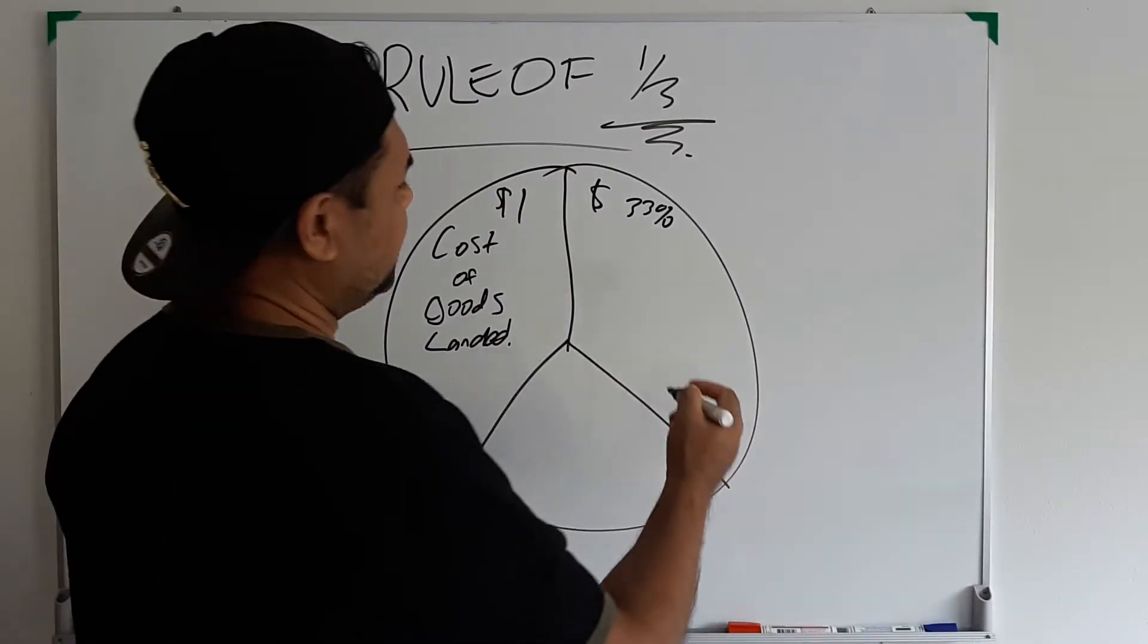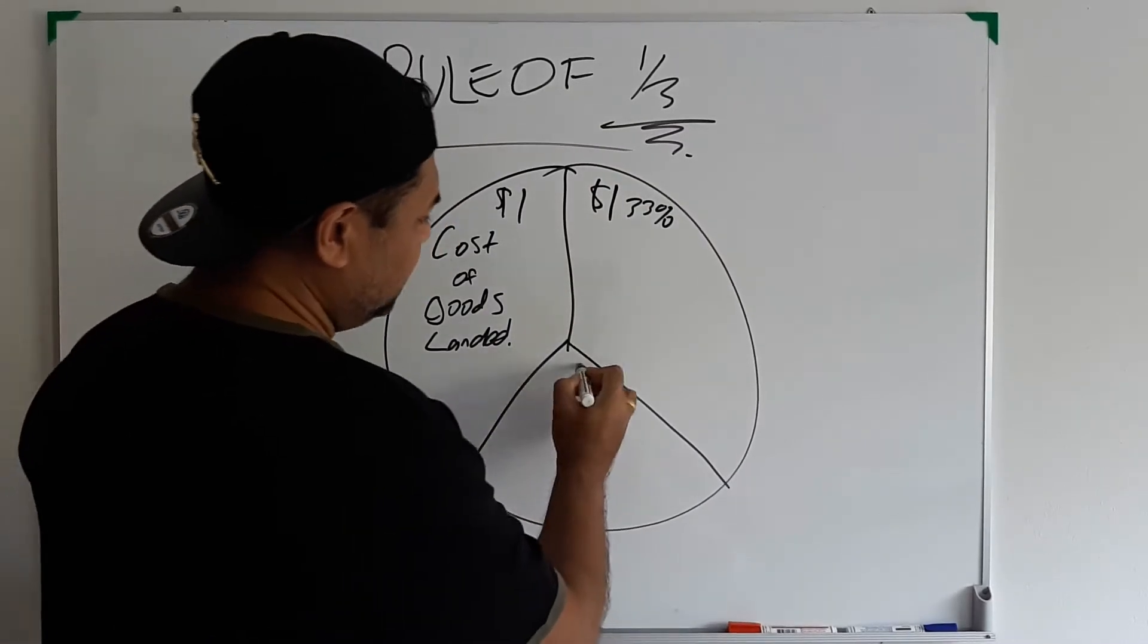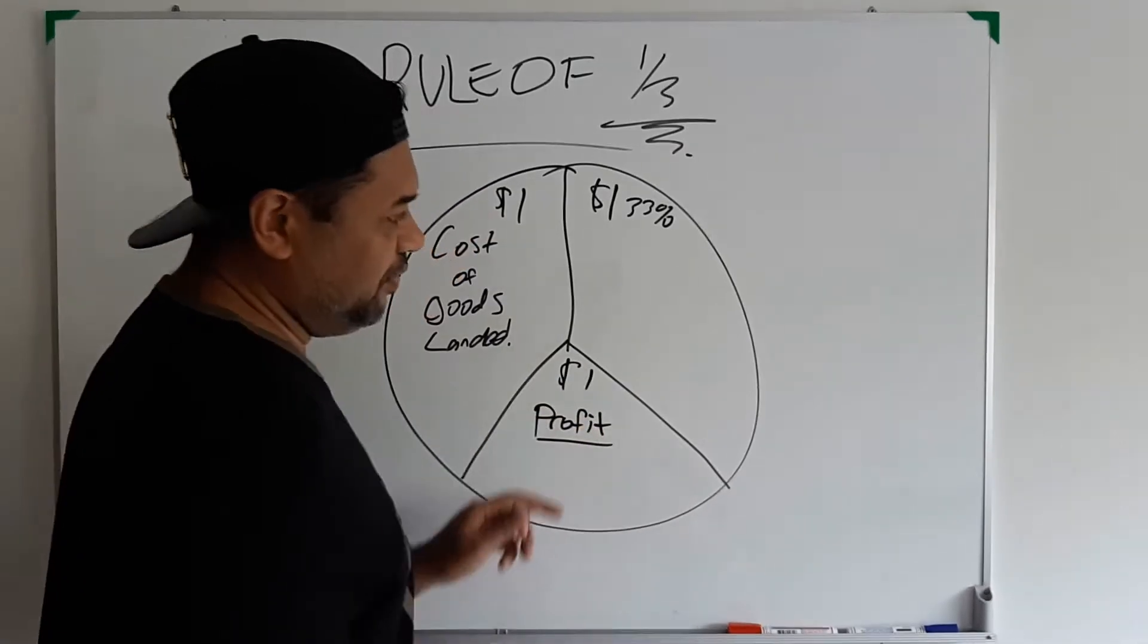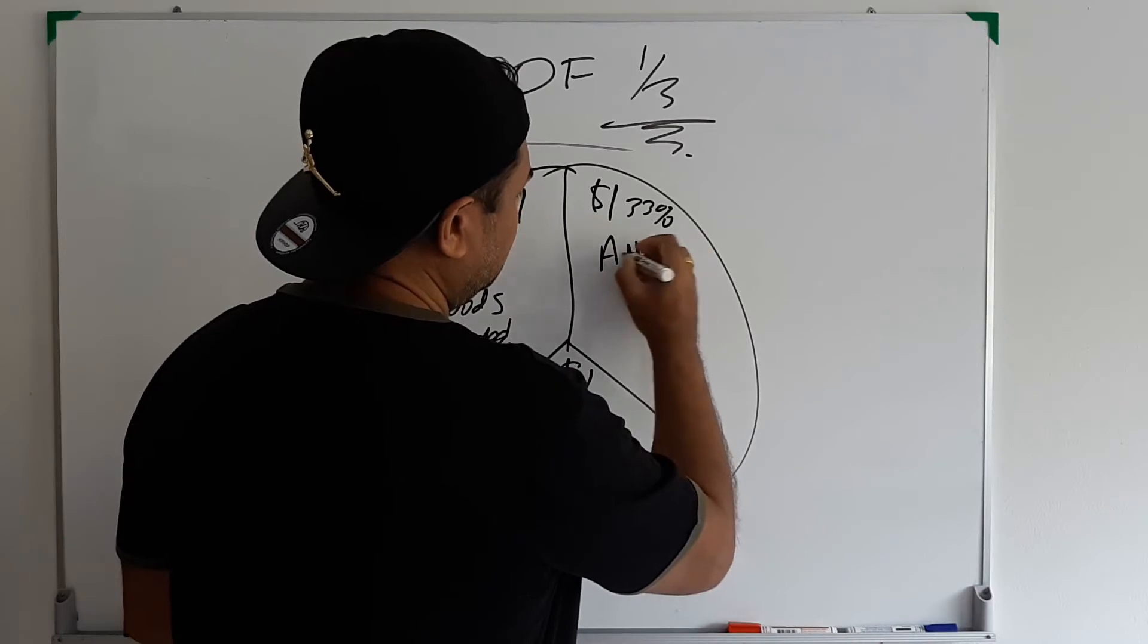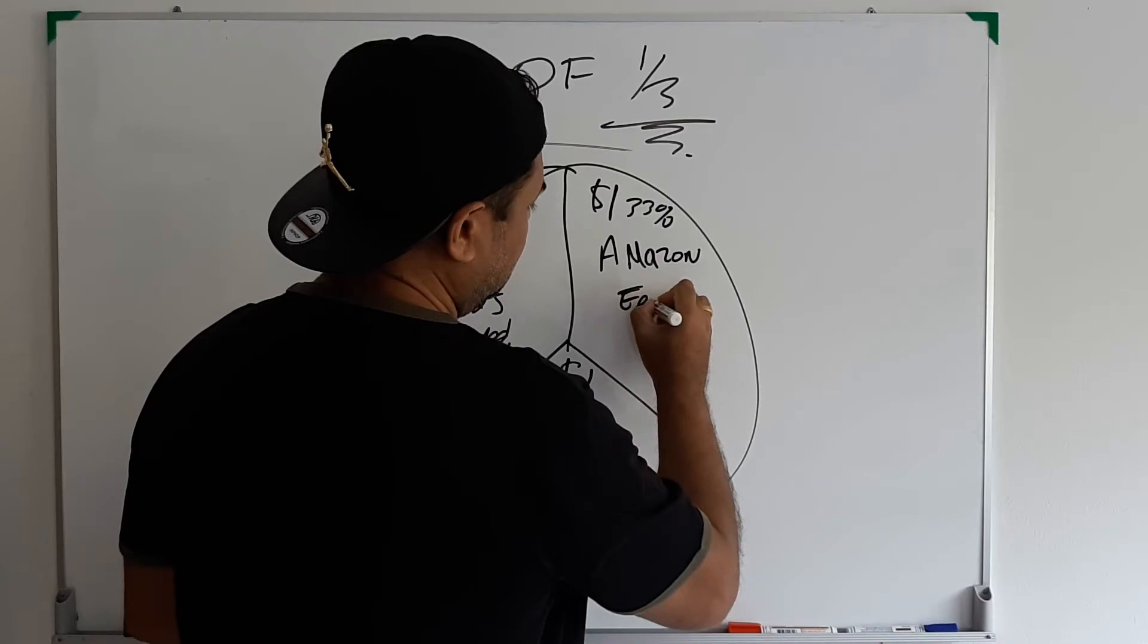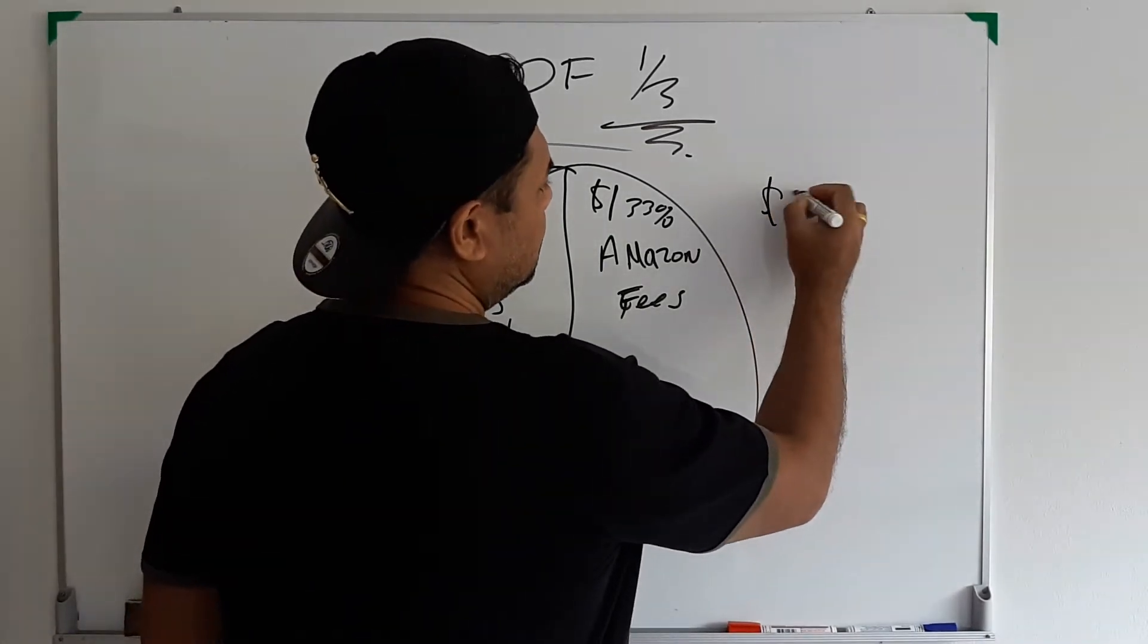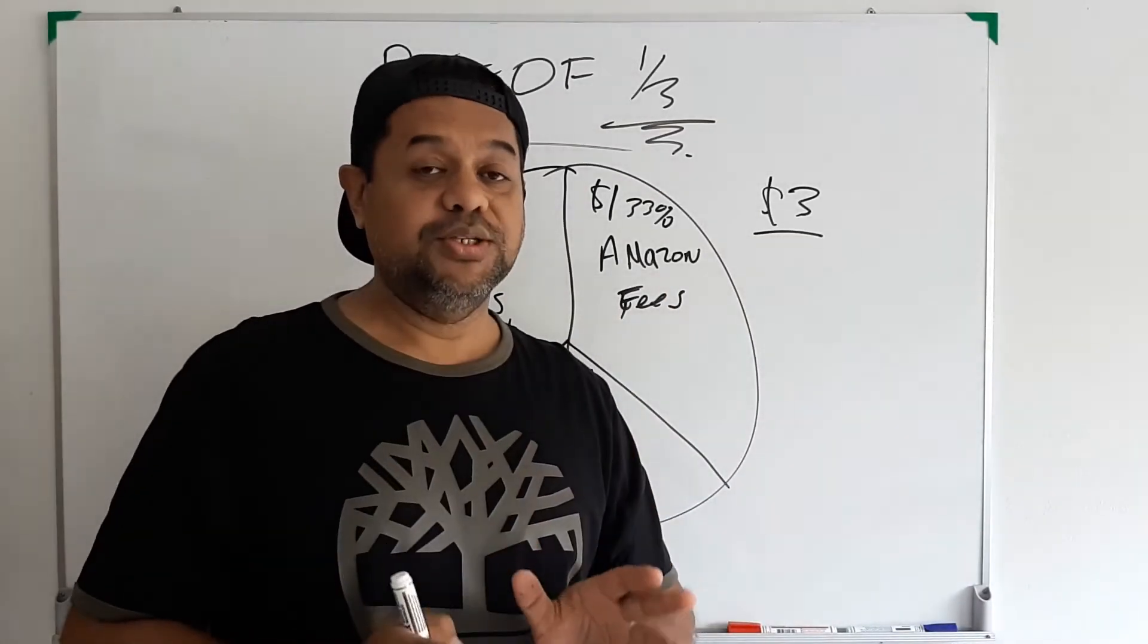That's also going to cost another dollar. And then here you've got a dollar which is your profit before tax. Now that you know this, that means you've got to sell this product for three dollars. If you can't sell this product for three dollars on Amazon, then you're going to lose money.